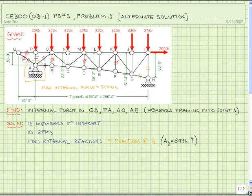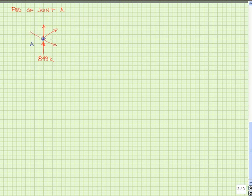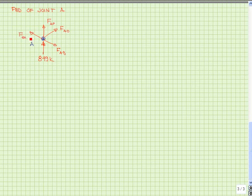Our next step in our truss roadmap to victory is to make appropriate cuts, and we have already done so. So we will now examine joint A. Let's draw a free body diagram of joint A. We have an 849 kip load reaction. We have various members that we have cut, thereby exposing an internal force. We will assume that internal force is in tension for all of them. Starting at the bottom right, we have the force in member AB, the force in member AO, the force in member AP, and the force in member QA. We notice that there are several angles we will need to calculate — we'll call this angle alpha and this angle beta.